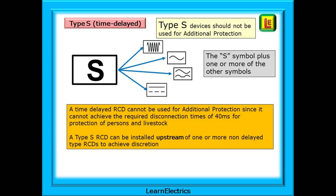The S type device is time-delayed, designed to respond a little slower. A time-delayed RCD cannot be used for additional protection since it cannot achieve the required disconnection time of 40 milliseconds for protection of persons and livestock. A type S RCD can be installed upstream of one or more non-delayed RCDs to achieve selectivity. Installing a bigger RCD upstream of two smaller ones does not guarantee the device nearest the fault will trip first — the only way to be sure is to install an S type upstream.